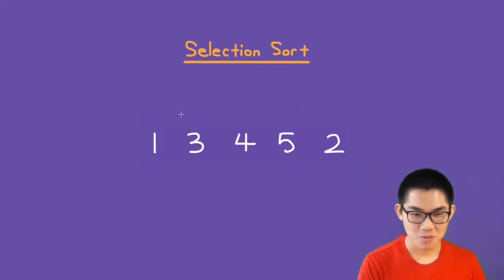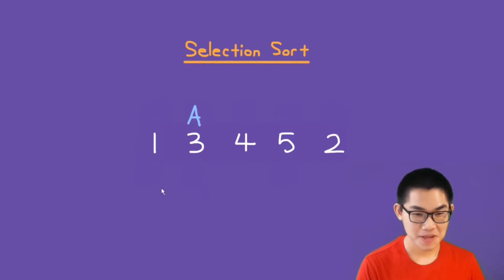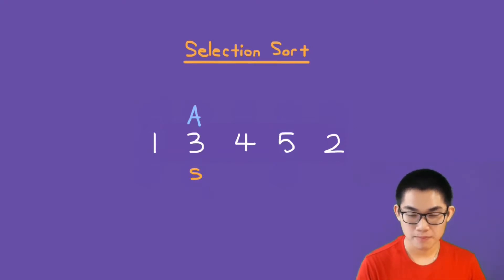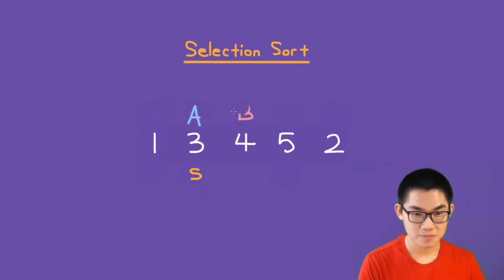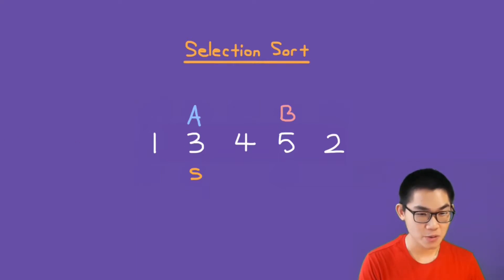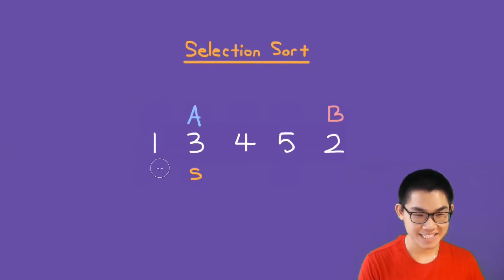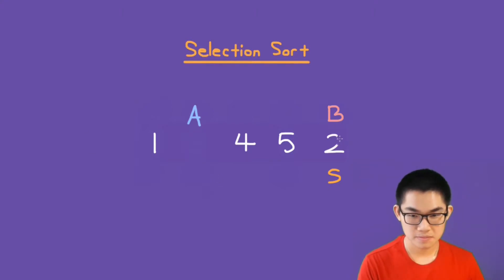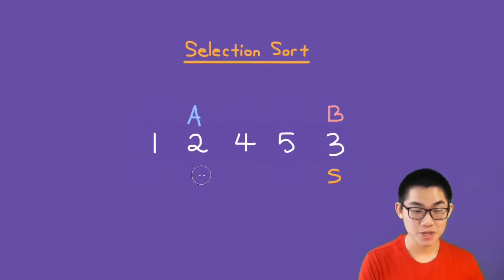We start over. This time we put A onto the second element. A says to B, find me the minimum number in this array. B assumes that 3 is the smallest number. B is at 4 and says, is 4 smaller than 3? No. Is 5 smaller than 3? No. Is 2 smaller than 3? Yes. B assumes 2 is the smallest element. B is at the end of the array, so we swap 3 and 2. Once we make the swap, 2 is now in its correct position.